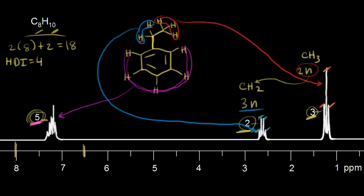Three neighbors: the next-door carbon has one, two, three methyl protons. The benzene ring carbon is also next door but has no protons on it. So we see only these three neighbors, and everything seems to make sense.